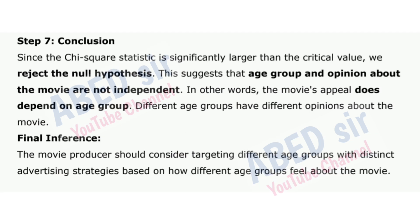Step 7: Conclusion. Since the chi-square statistic is significantly larger than the critical value, we reject the null hypothesis. This suggests that age group and opinion about the movie are not independent — in other words, the movie's appeal does depend on age group. Different age groups have different opinions about the movie. Final inference: The movie producer should consider targeting different age groups with distinct advertising strategies based on how different age groups feel about the movie.